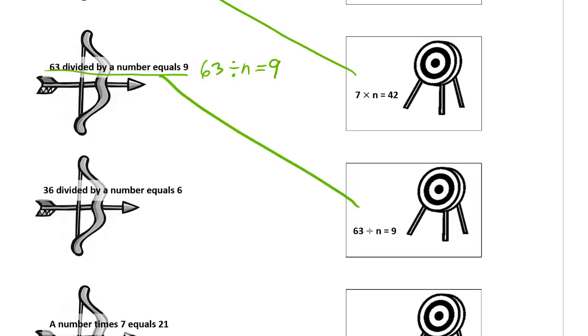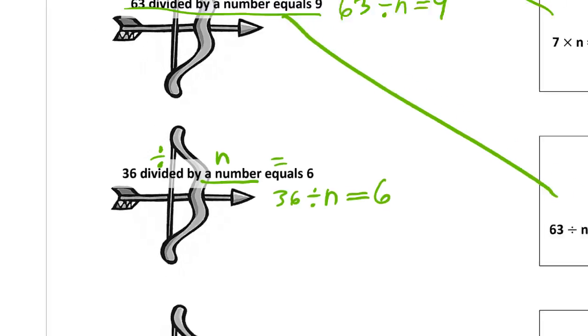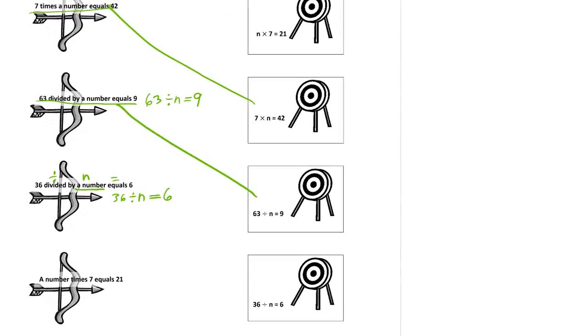Almost done. 36 divided by a number equals 6. How do we write that number sentence? 36 divided by a number—we're using n for a number—equals 6. Right? So that's equals, that's divided by, and that's a number. So that's what we get. We're looking for 36 divided by n equals 6. That's it right here.